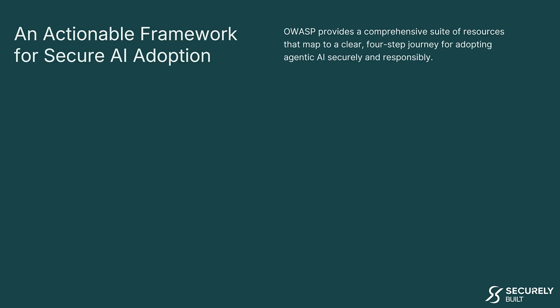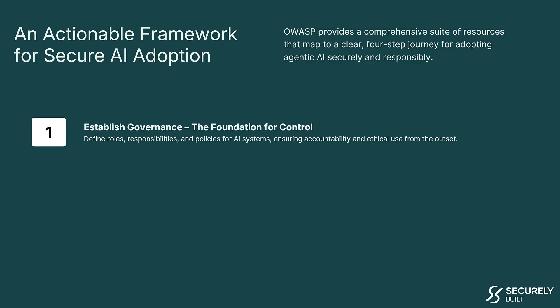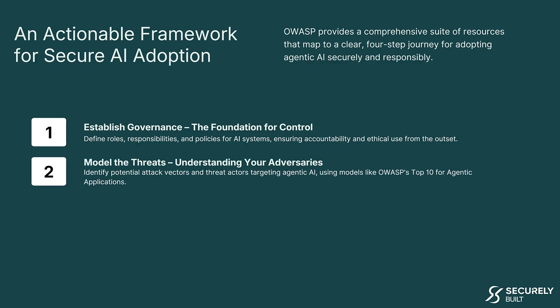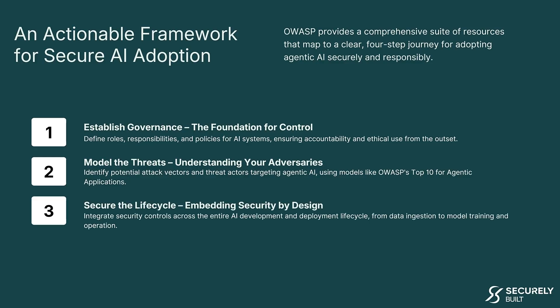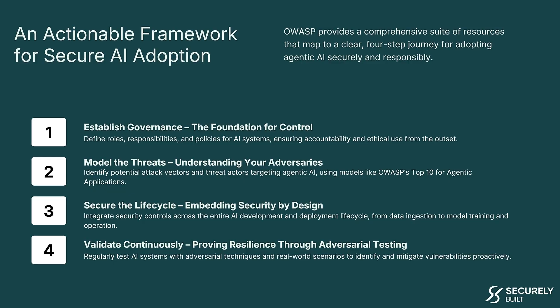OWASP provides a comprehensive suite of resources mapping to a clear four-step journey for adopting agentic AI securely. Step one is to establish governance — defining roles, responsibilities, and policies for AI systems, ensuring accountability and ethical use. Step two is to model the threats — identifying potential attack vectors using models like the OWASP Top 10 for agentic applications. Step three is the secure lifecycle — embedding security controls across the entire AI development and deployment lifecycle. Step four is to validate continuously — regularly testing AI systems with adversarial techniques to identify and mitigate vulnerabilities proactively.